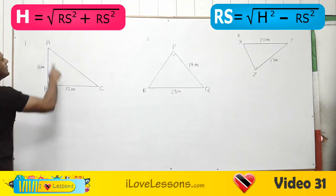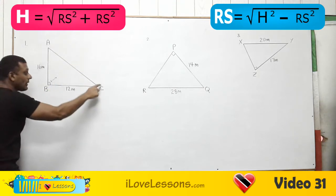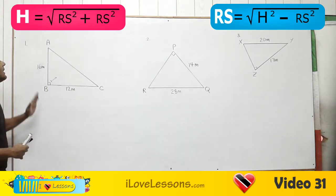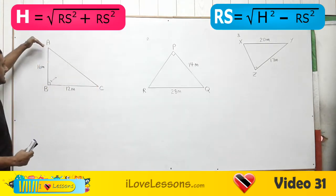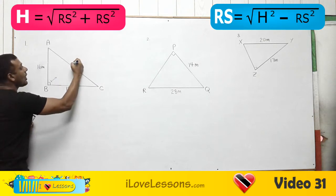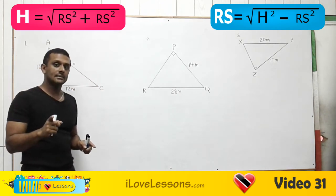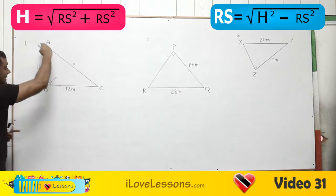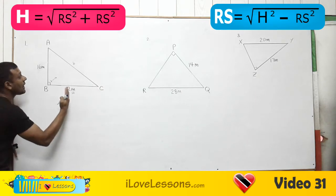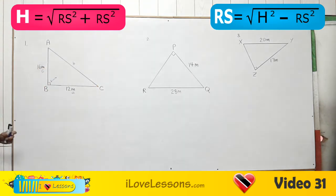Whenever you have any triangle, the examiner will put capital letters to the corners. So this is angle A, angle C, and angle B. Angle B is my right angle. You are only allowed to use capital letters for the corners. The name of a side will be named with a common letter — because it's opposite that angle. So the side opposite angle B is common b. When naming sides, you are only allowed to use common letters. The side opposite angle A is common a, and the side opposite capital C is common c.